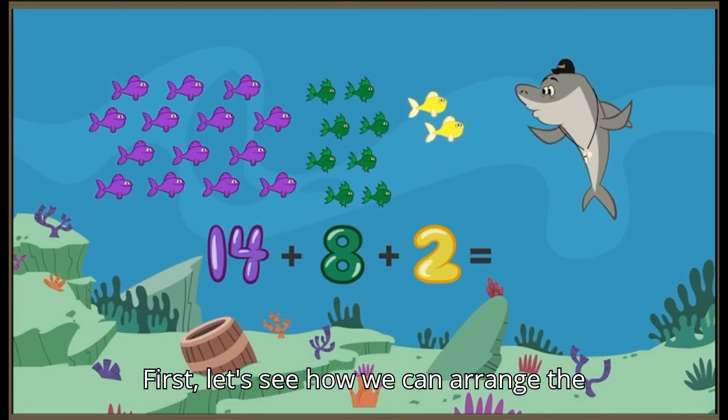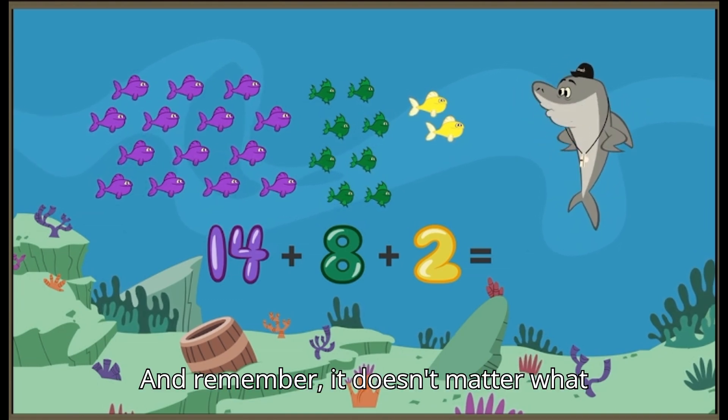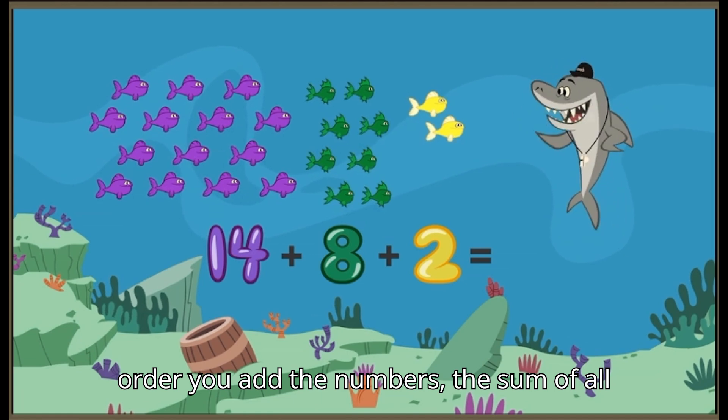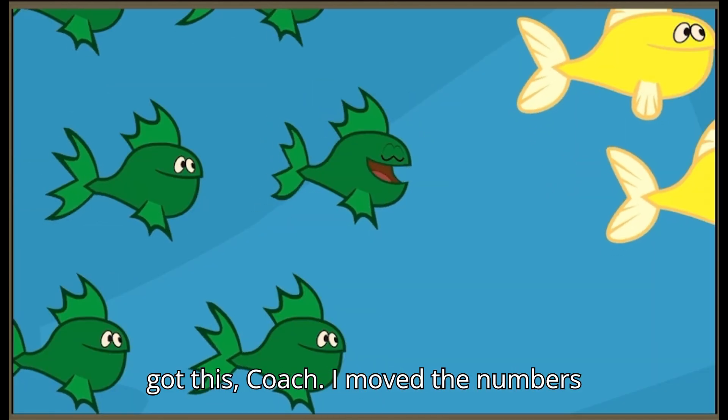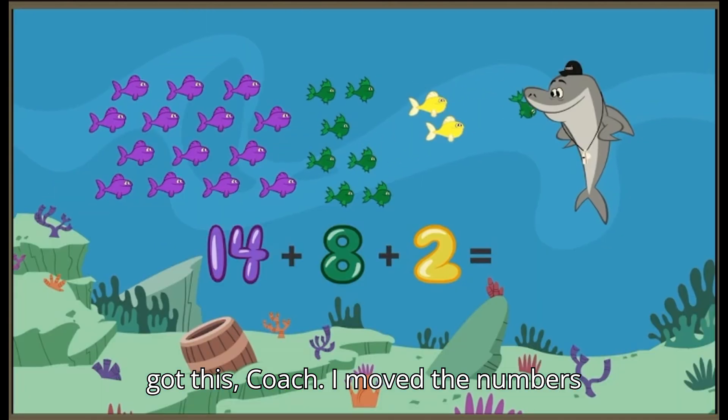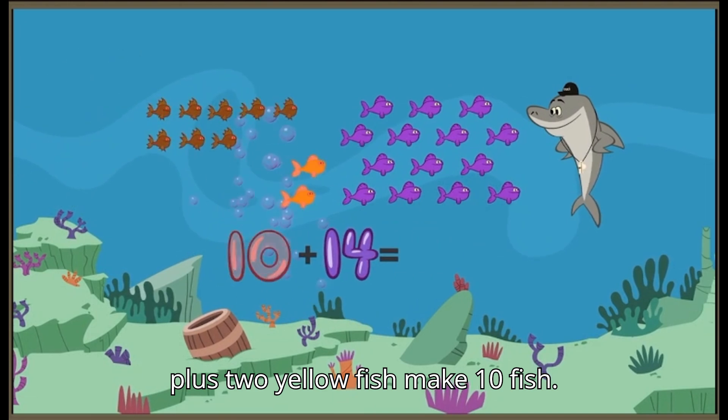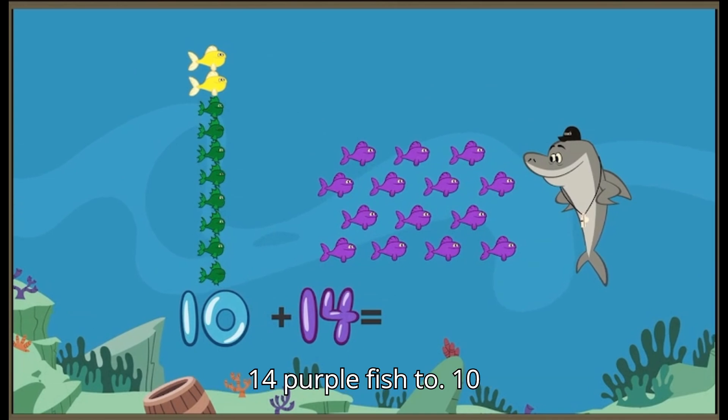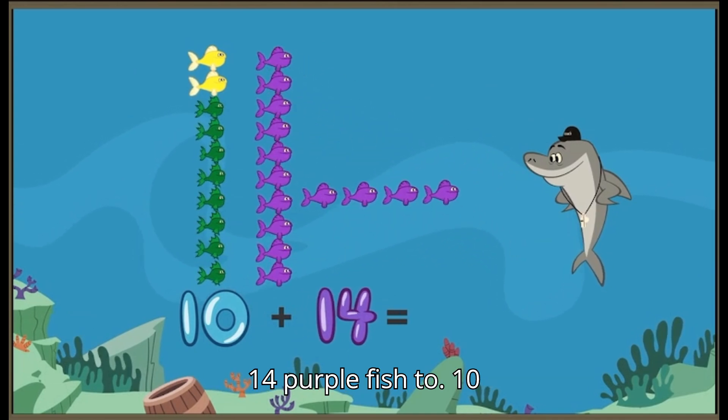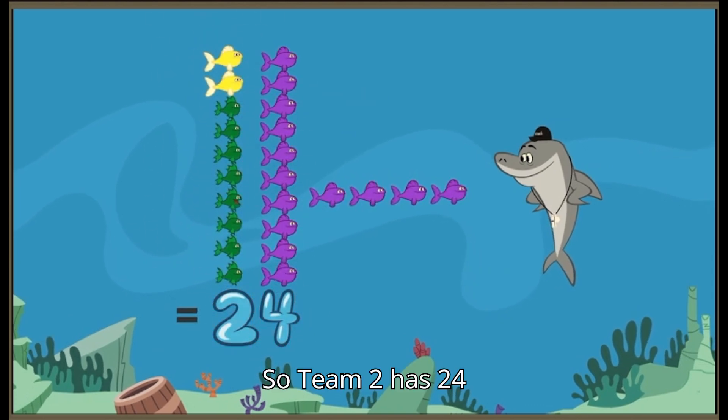First, let's see how we can arrange the numbers so that adding them is easier. And remember, it doesn't matter what order you add the numbers. The sum of all three is always the same. I got this, Coach. I move the numbers around because eight of us greenfish plus two yellowfish make ten fish. Ten is a nice round number to add the fourteen purplefish to. Ten plus fourteen equals twenty-four. So team two has twenty-four fish.